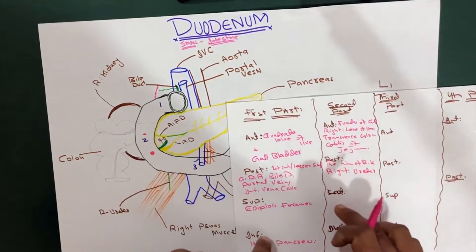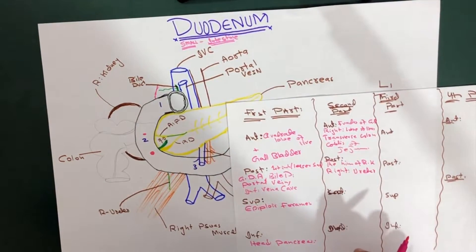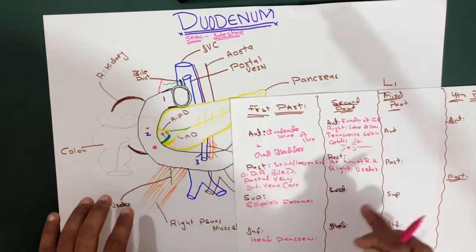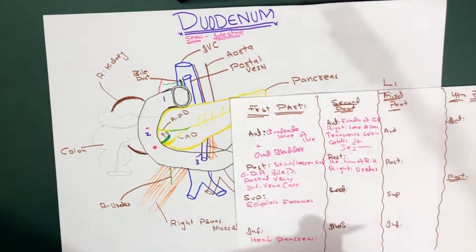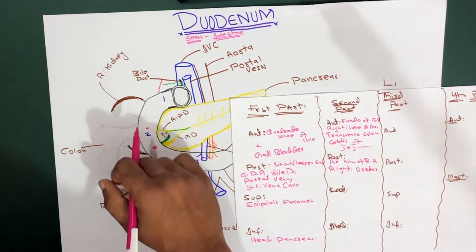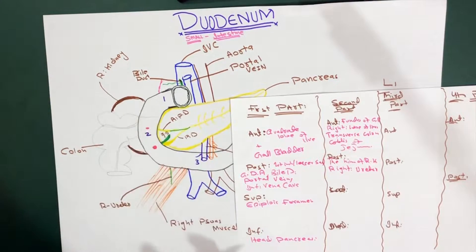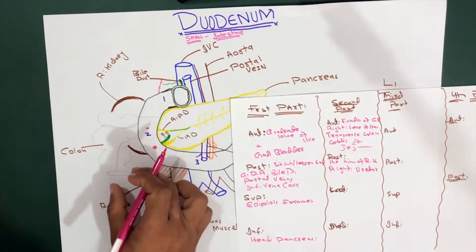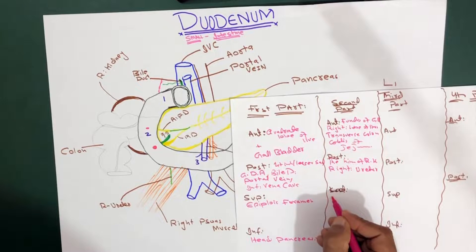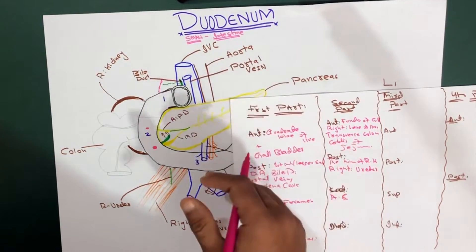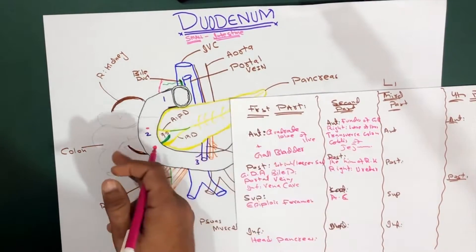Now let's talk about what is lateral and what is medial to the second part of the duodenum. Laterally, we have got this guy — this is your ascending colon. The colon is going upward, but it's actually lateral to your second part of the duodenum. So we write down the ascending colon, which is actually lateral to the second part.